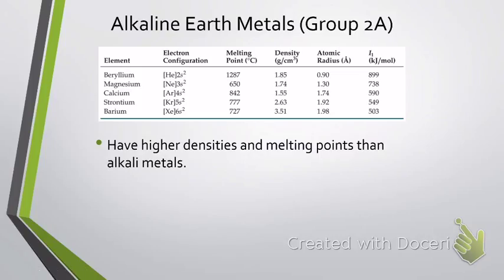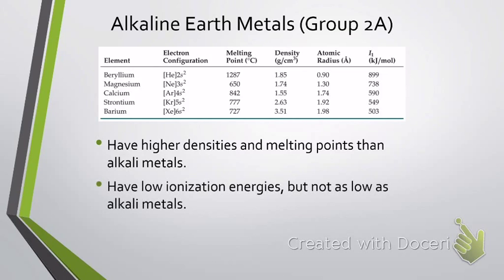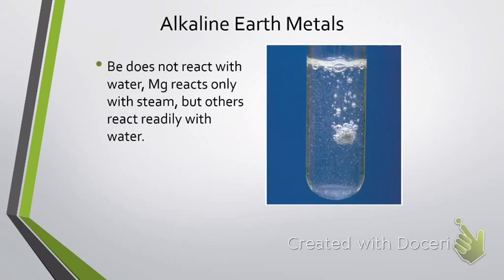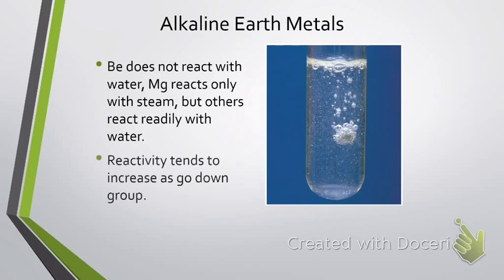For Group 2A, the alkaline earth metals, they're going to have higher densities and higher melting points than the alkali metals. They also have slightly higher ionization energies, but it's still quite low compared to other elements. The alkaline earth metals react differently with water: beryllium doesn't react at all, magnesium can only react with steam at high temperatures, but the others do react with water — this reactivity increases as you go down the periodic table for Group 2A metals.